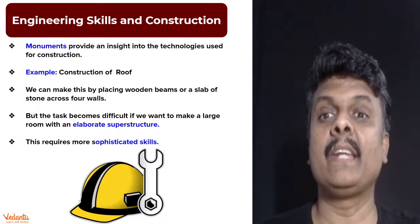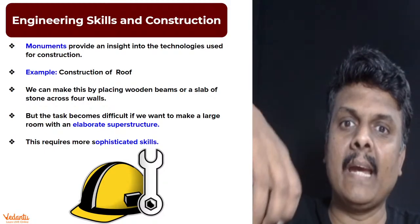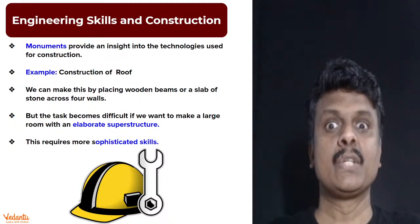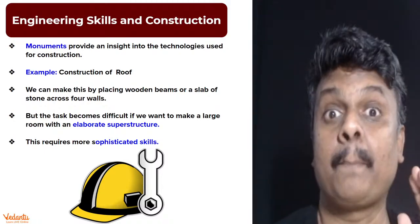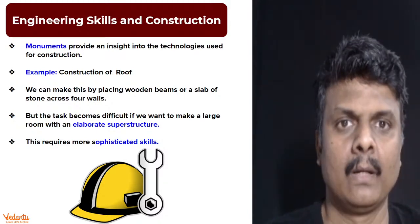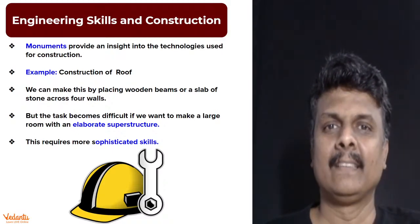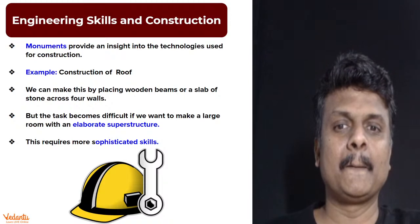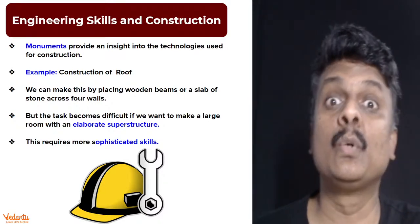Monuments provide engineering skills and construction insights. Looking at these monuments from 800 years ago, you will not just understand how well they were constructed but also the kind of civilization that existed at that point in time. Look at the roof, look at the style of construction — take the Taj Mahal or Qutub Minar as examples. The roof was created by placing wooden beams or a slab on four walls, but people wanted to engineer it beautifully and make people say wow — and for this you need engineering skills.